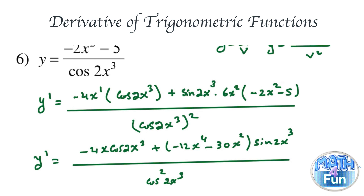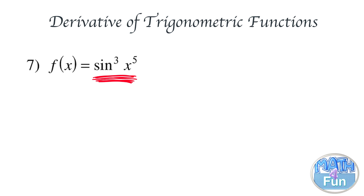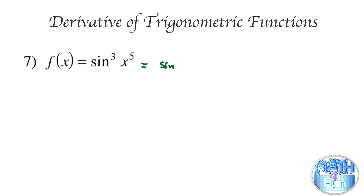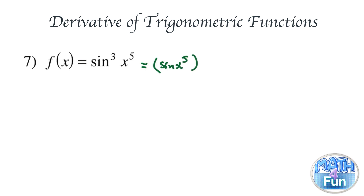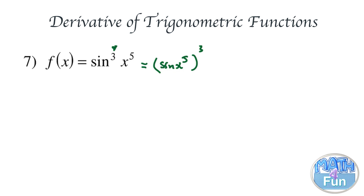Here we have f of x equal to sine cubed of x to the power of 5. This is in the same form as sine of x to the power of 5, all to the power of 3, where the 3 is a power for the sine and x to the power of 5 is the angle inside the sine. We apply chain rule.